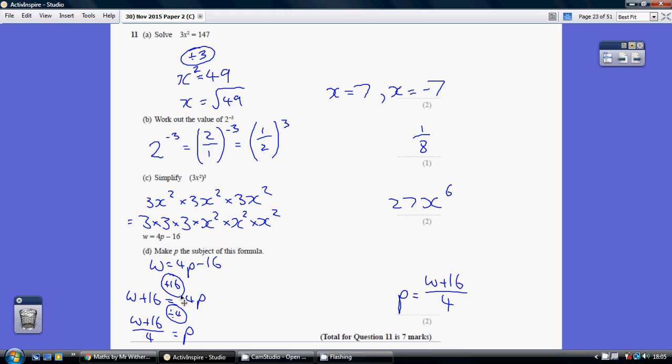How do we undo a timesing by 4? Well we choose to divide by 4. Now in order to make the point that it's the whole of the left hand side to be divided by 4, best to do this by way of a fraction. So make it W plus 16 all over 4. That means we don't need to worry about using brackets to make the point. Just give your answer as a fraction. So P equals W plus 16 all over 4.